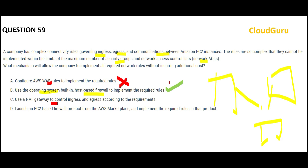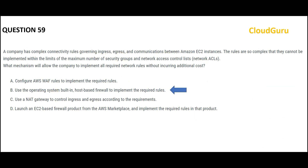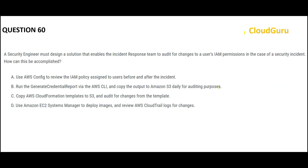Option D says to use a firewall-based product from the marketplace. This is not a specific solution — we don't know which product from the marketplace they are recommending. So the correct and final answer here is the host-based firewall at the operating system level.